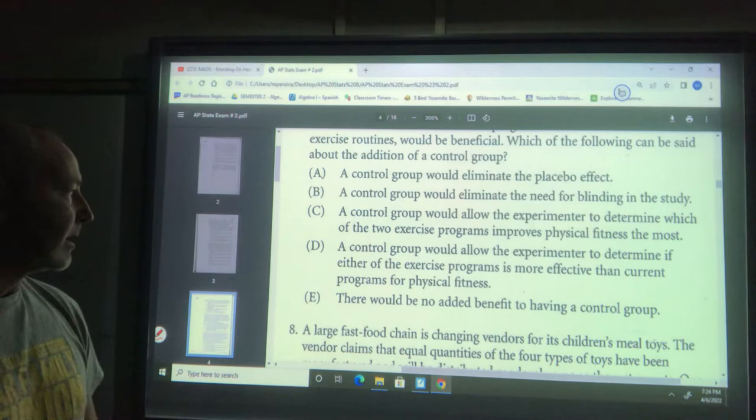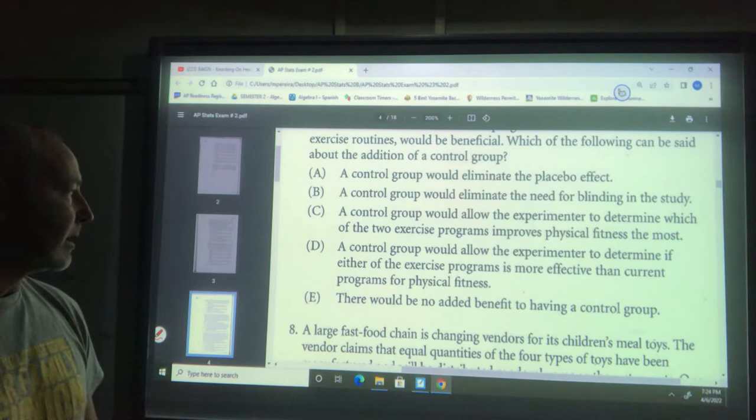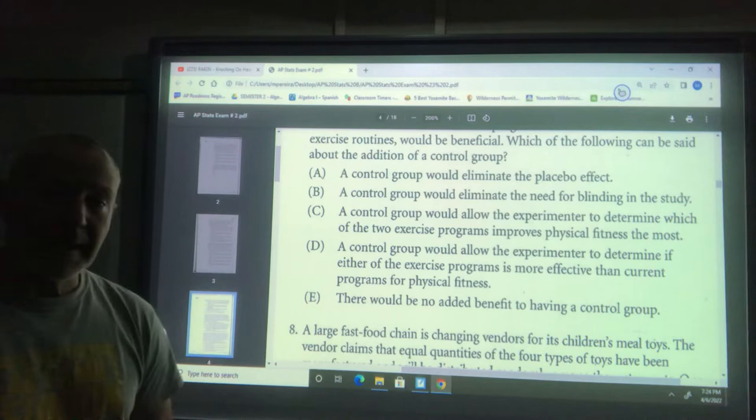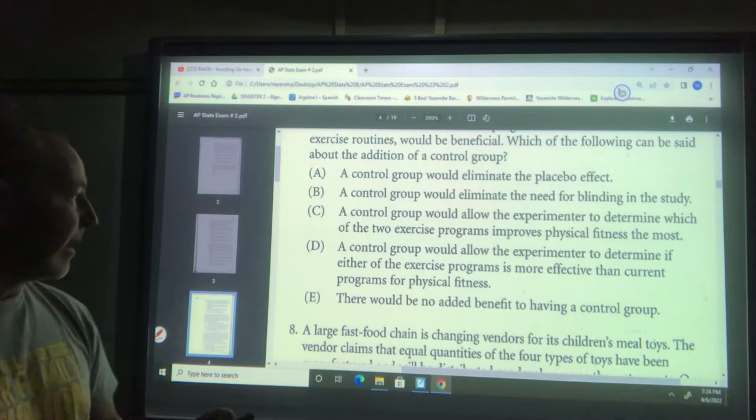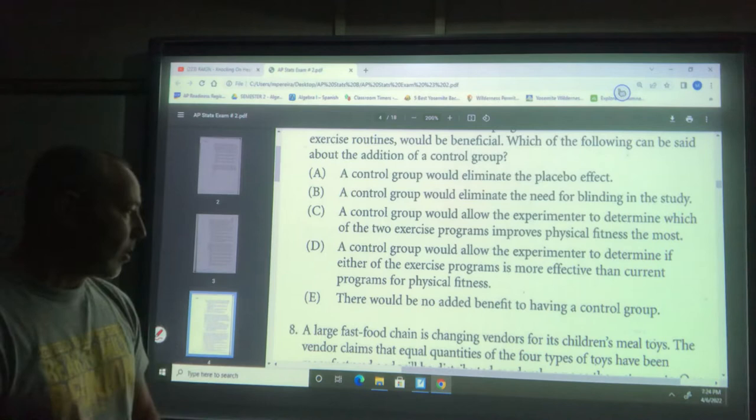A control group would allow the experimenter to determine if either program is more effective than current programs. That's the purpose of the control group - to get a baseline to see if your new thing is different or not. D is the correct choice.